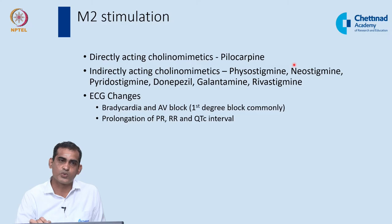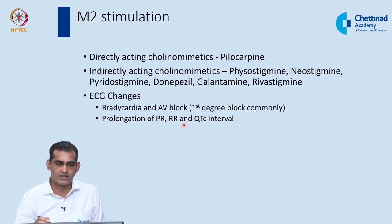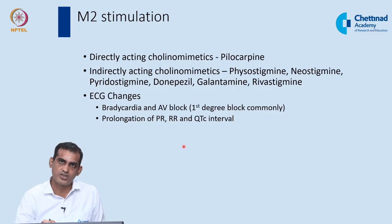ECG changes from M2 receptor stimulation include bradycardia, AV nodal block (most commonly first-degree), and prolongation of PR interval, RR interval, and QTc interval. A patient receiving drugs for Alzheimer's disease may therefore show these ECG changes.